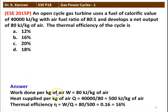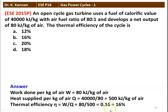We calculate the answer. The work done per kg of air, W = 80 kJ per kg of air. Heat supplied per kg of air, Q = 40,000 ÷ 80 = 500 kJ per kg of air, where 80 is the air-fuel ratio. Thermal efficiency eta = W / Q = 80 / 500 = 0.16, which is 16%. So the answer is option B, 16%.